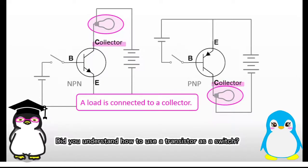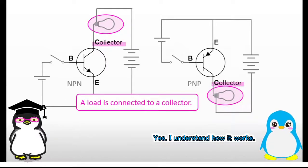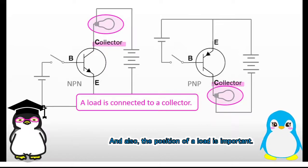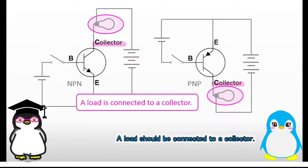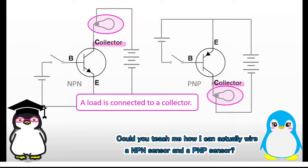Did you understand how to use a transistor as a switch? Yes, I understand how it works. And also, the position of a load is important. A load should be connected to a collector. Could you teach me how I can actually wire an NPN sensor and a PNP sensor?